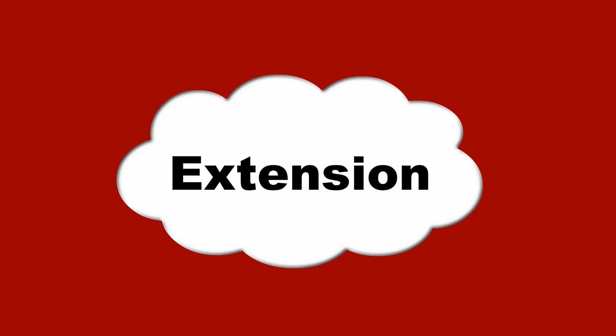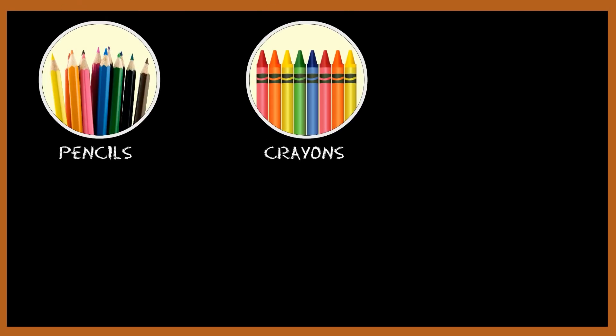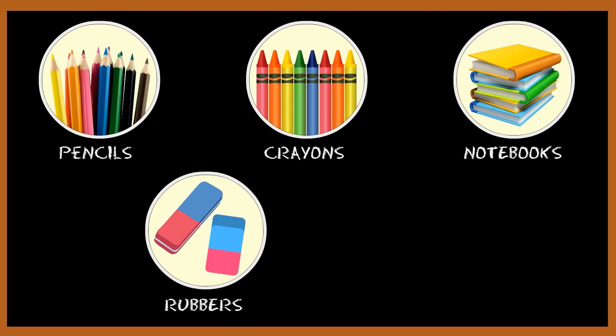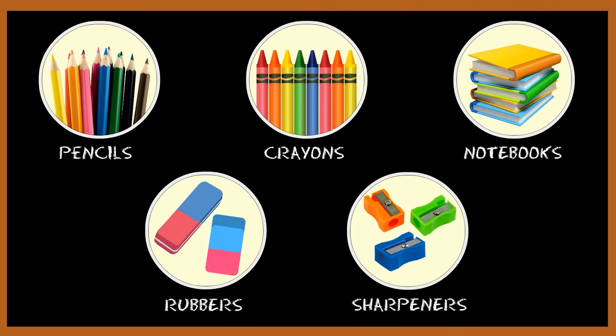Children, now collect all your stationery items like pencils, crayons, notebooks, rubbers and sharpeners. Group similar items together. Count each one and find out which one is maximum and which one is minimum in number.